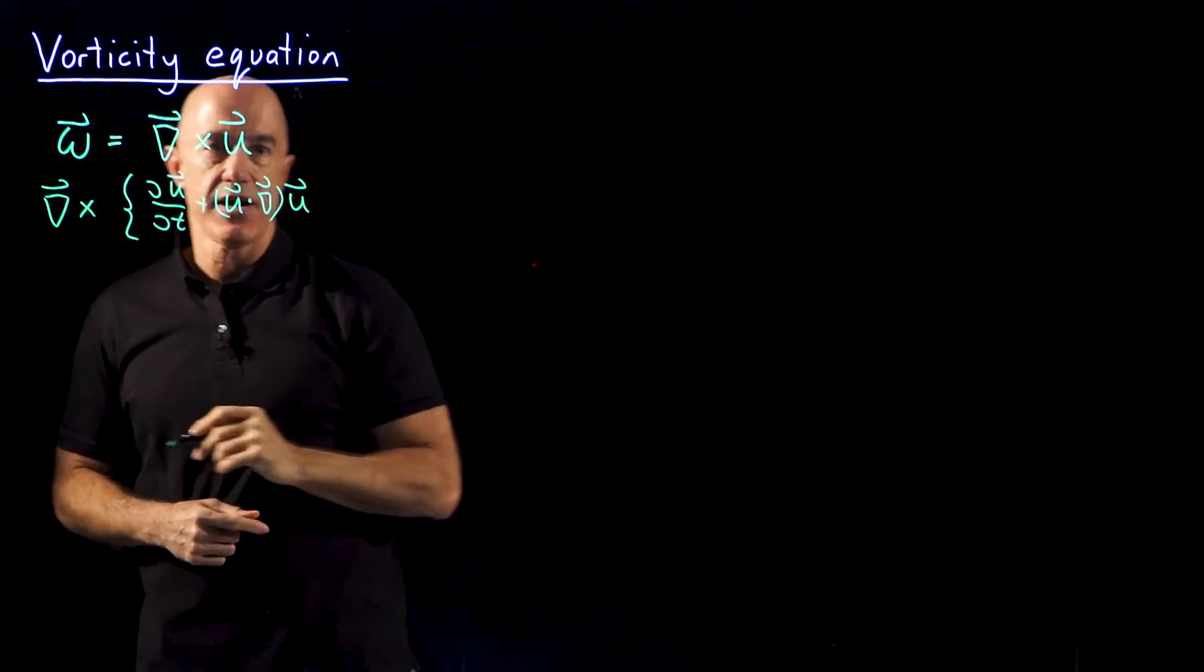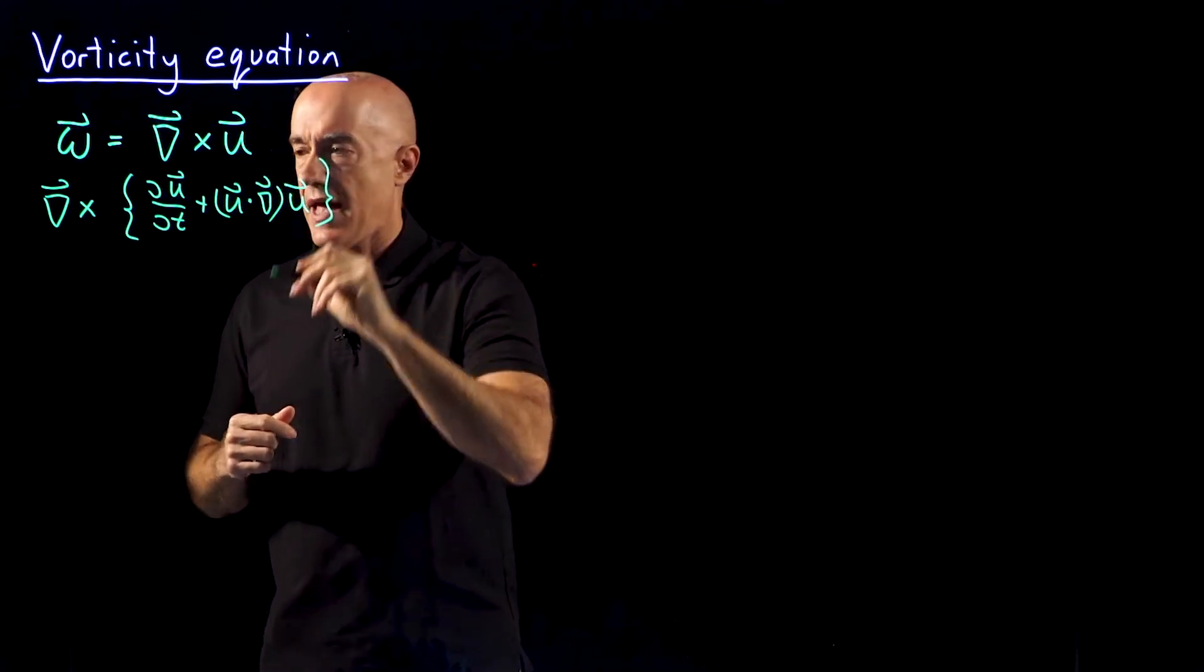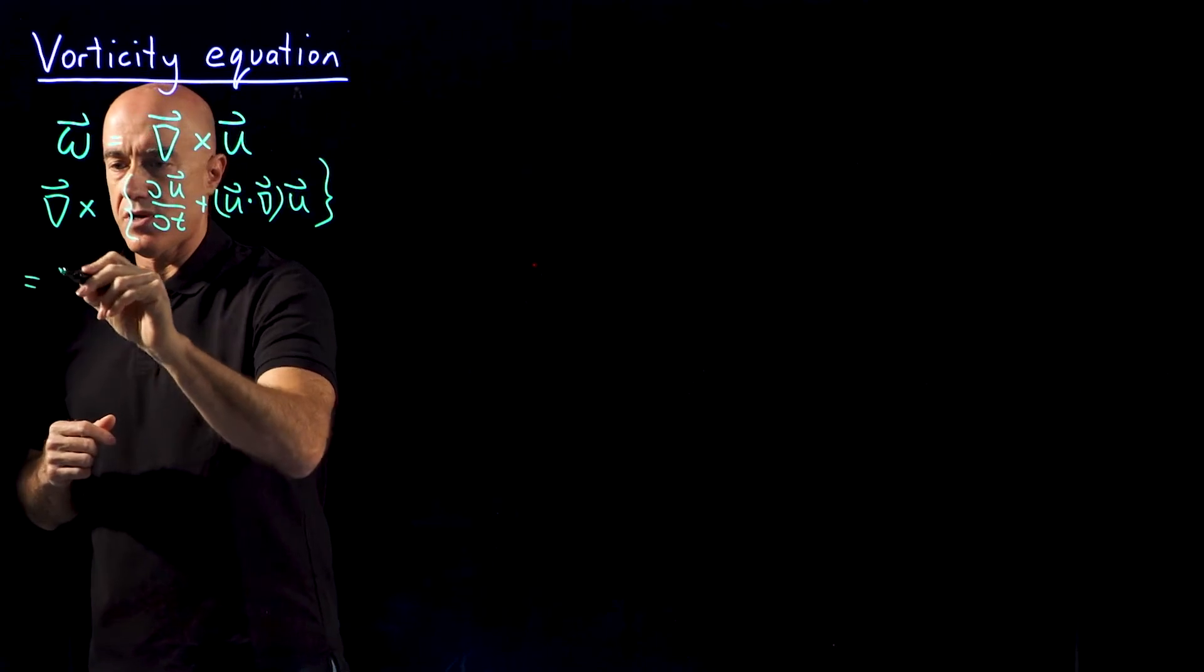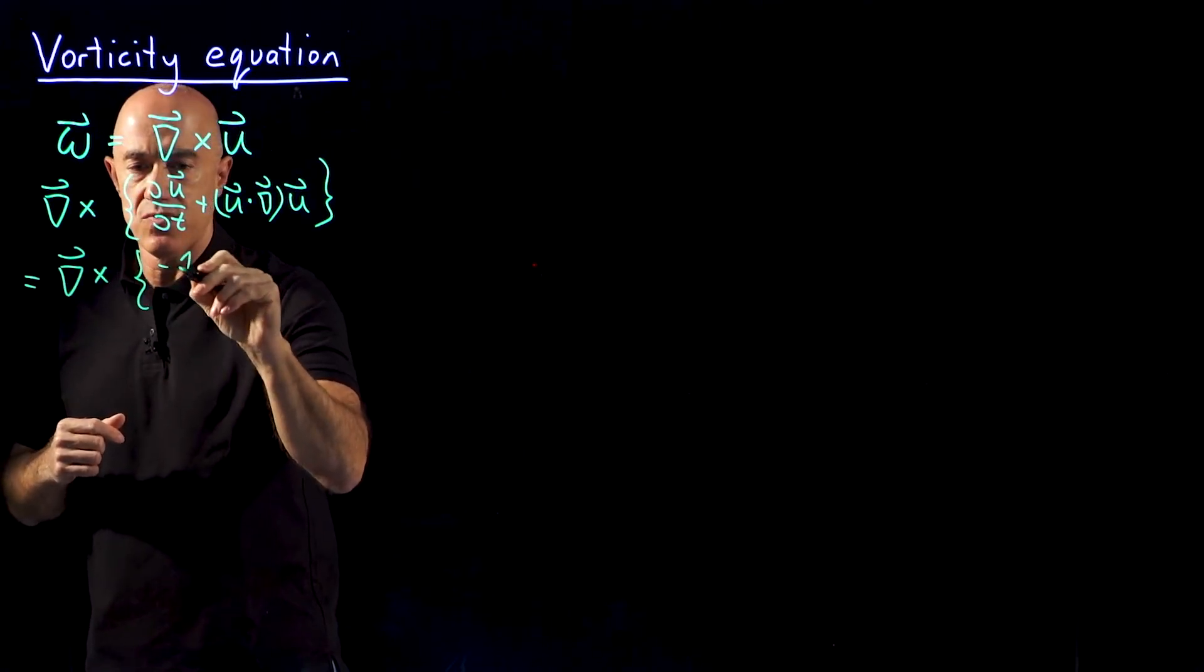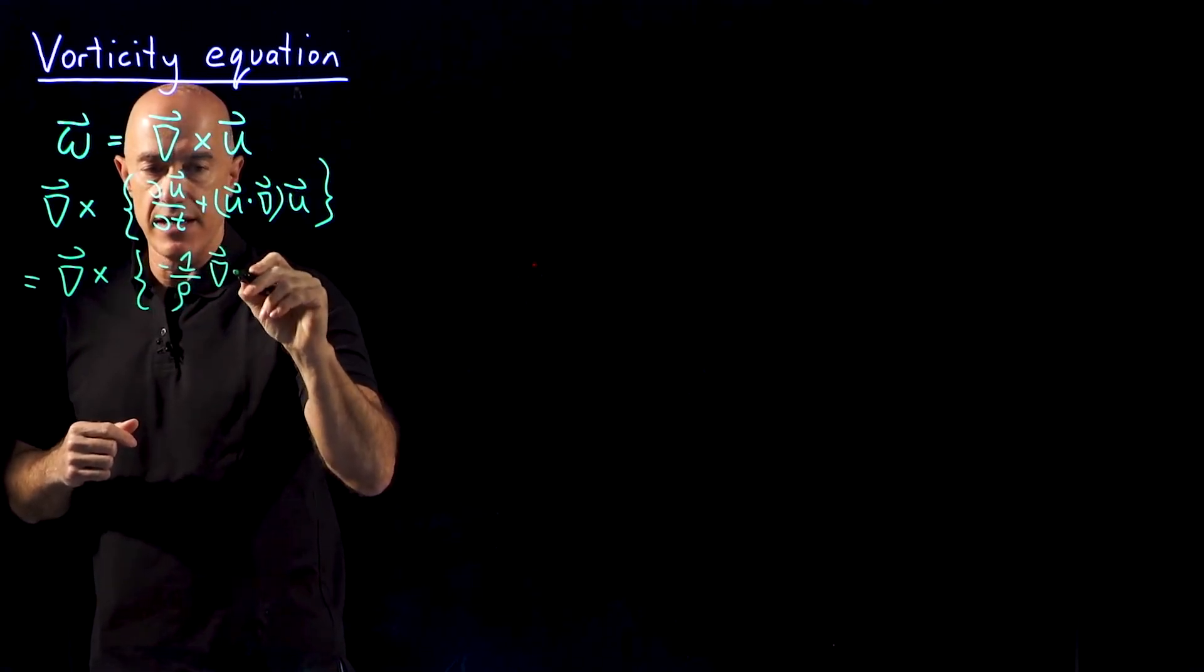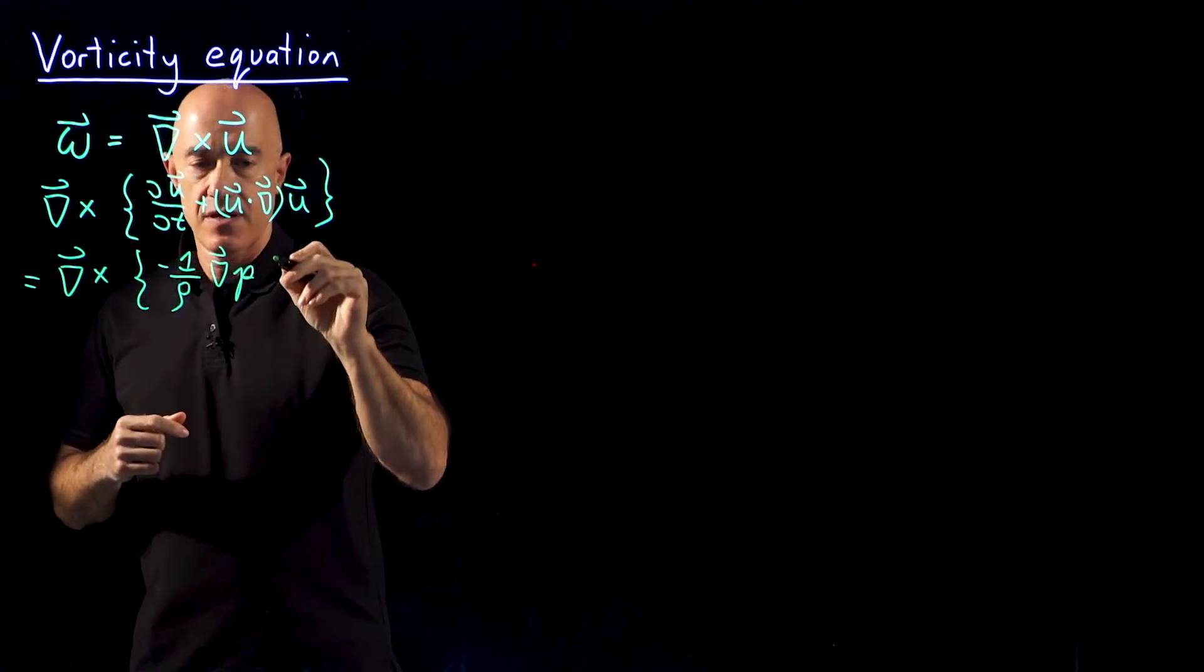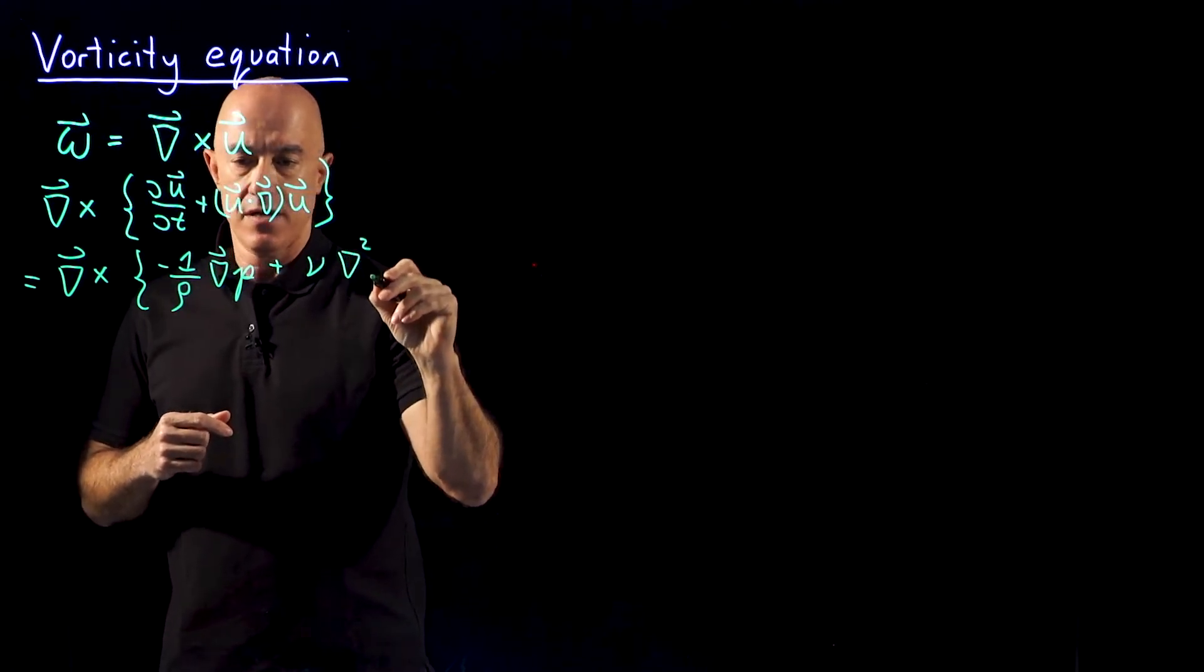We can put a parenthesis here, but it's not absolutely necessary. And that's going to be equal to the curl of the left-hand side, which is minus 1 over the density rho times the gradient of the pressure, plus the viscous term nu times del squared u.